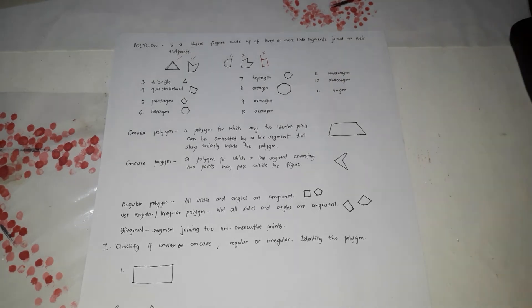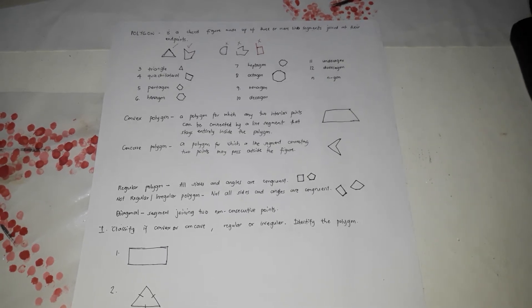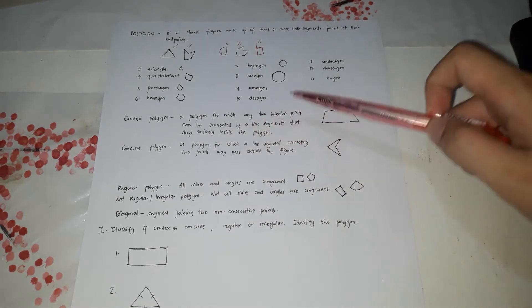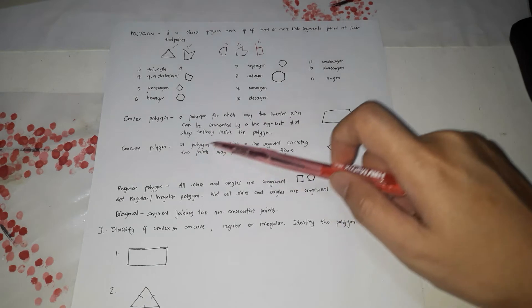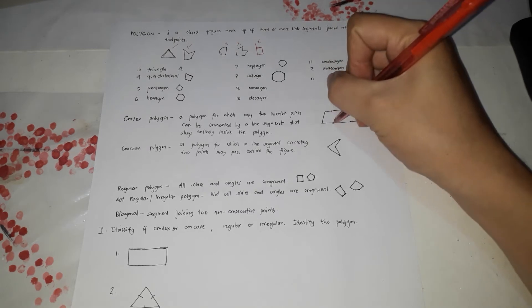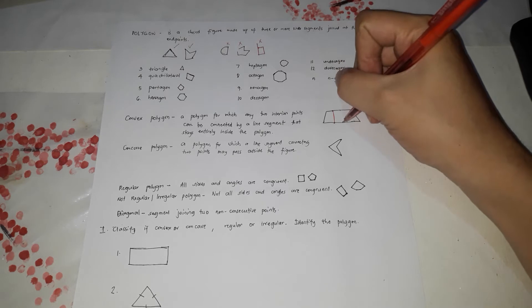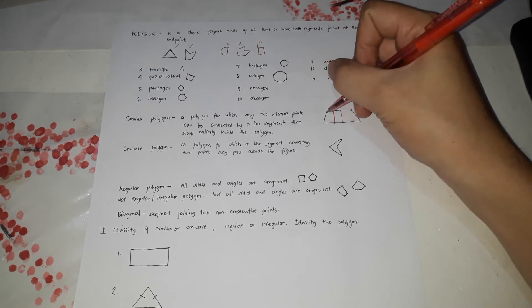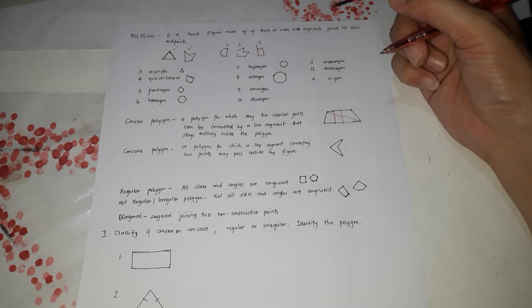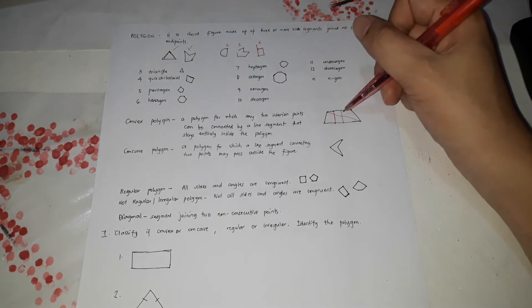There are also classifications of polygons based on whether, if you connect two interior points, the segment stays inside the polygon. It is either convex or concave. Convex means it is a polygon for which any two interior points can be connected by a line segment that stays entirely inside the polygon. So if you pick a first point and a second point and draw a line, it should remain inside the polygon — that's convex.